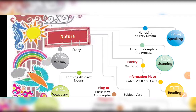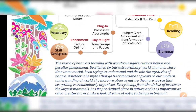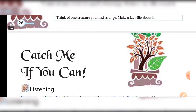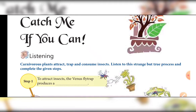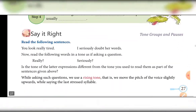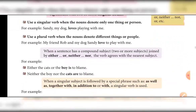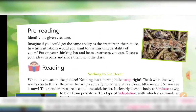We are on page number one of Unit Number Two — the unit is 'Nature.' In this unit we will read two sections, the first of which is 'Catch Me If You Can,' which I have just introduced. Please open your book to page number 30 and keep a pencil in your hand to note down meanings. Pre-reading activity: identify the given creatures and imagine if you could have the same ability as the creature in the picture — in which situation would you want to use this unique ability?